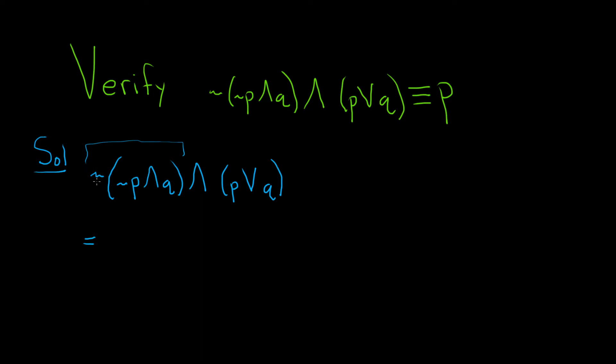De Morgan's law basically says you can kind of distribute the negation, loosely speaking, and this and will become an or.